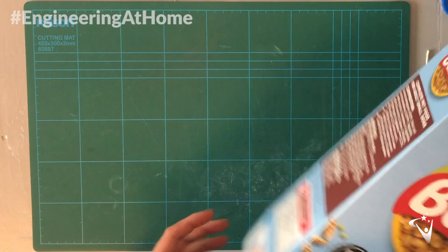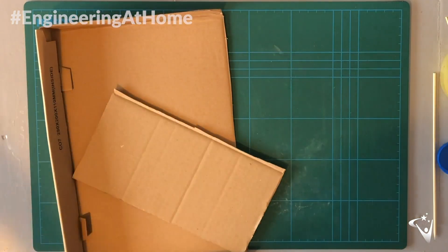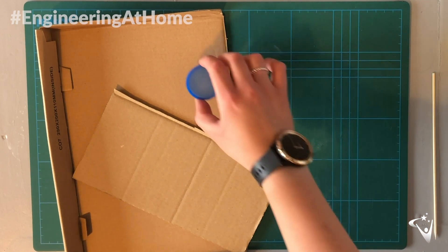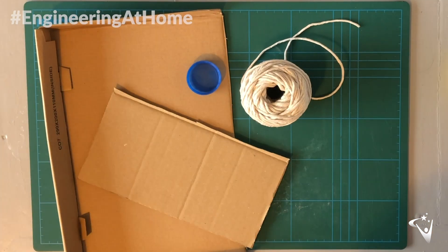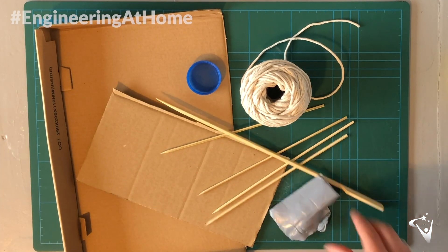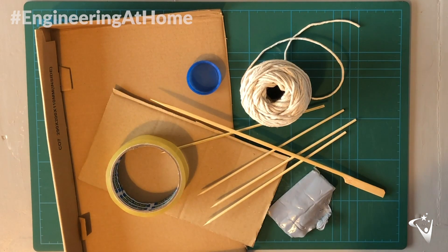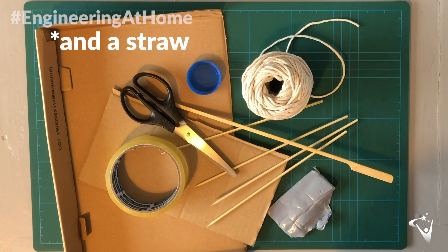So for this challenge you're going to need a large box, you could use a shoe box or a cereal box, some corrugated card, a milk bottle top, some string and some bamboo skewers, some blue tack and some sellotape and a pair of scissors. As with all of our engineering at home challenges make sure you have adult supervision.